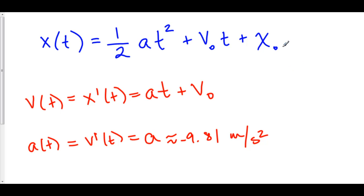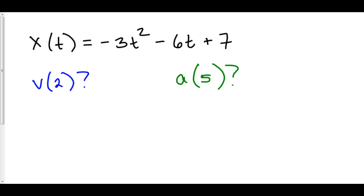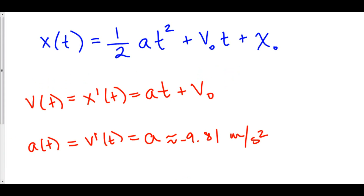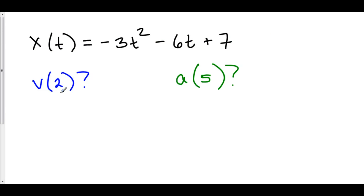However, for the time being, since we're doing derivatives, given position we can find our velocity function as well as our acceleration function. Let's do a problem. Our position over time is negative 3t squared minus 6t plus 7. What is the velocity at time 2? To find the velocity at time 2, we first need to take the derivative of position to find velocity.